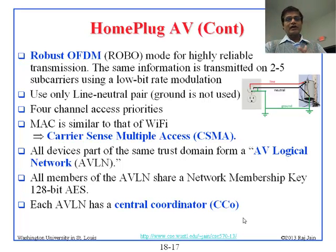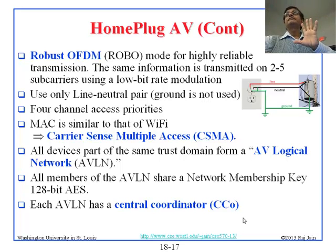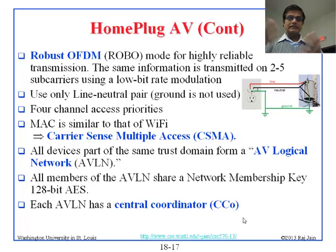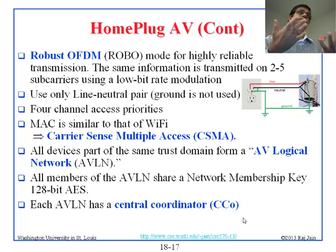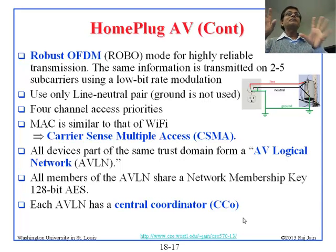All devices part of the same trust domain form an AVLN — Audio Visual Logical Network. If you have a network of your own, that is one AVLN. If somebody else has their network on the same wires, that is another AVLN. Each AVLN is like a LAN and they share a membership key. Before you can talk to the manager, you have to have that key. There is a central controller — called CCO — which is elected. All of the plugs you have bought can act as a controller, and you elect one as the CCO for that network.